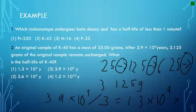There are two more examples. Which radioisotope undergoes beta decay and has a half-life of less than one minute? The answer is found simply by looking at table N in your reference table. Now the second one: an original sample of K-40 has a mass of 25 grams. After 3.9 times 10 to the 9th years, 3.125 grams of the original sample remains unchanged. What is the half-life of K-40?